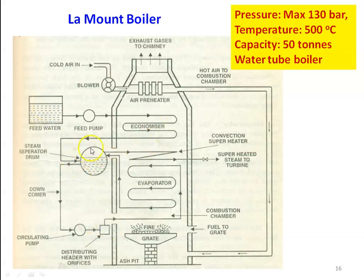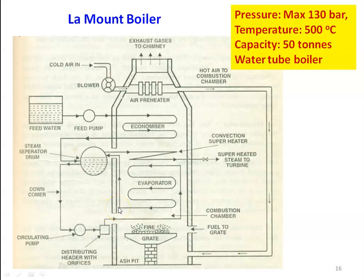Then we have the steam separating drum. Water enters here and is taken to the circulating pump and then to the distribution header. From here the water is circulated through the evaporator using the circulating pump, where it absorbs heat energy, converts into steam, and the steam returns to the drum. In the steam separating drum, steam collects at the top. When the steam stop valve is opened, the steam flows through the superheater where it is superheated, and the superheated steam goes to the steam turbine or steam engine.